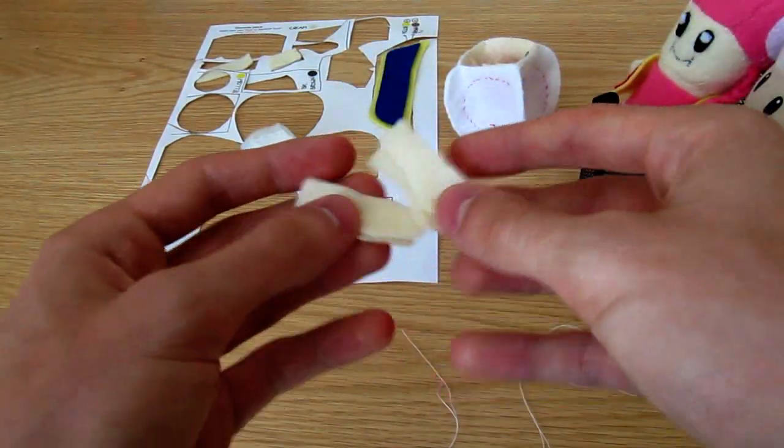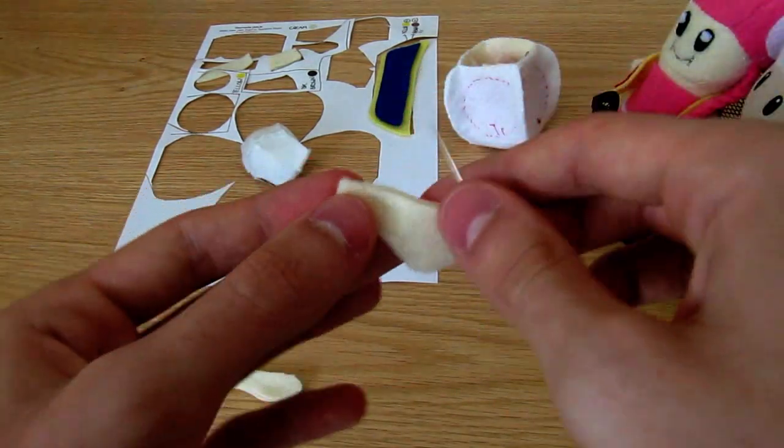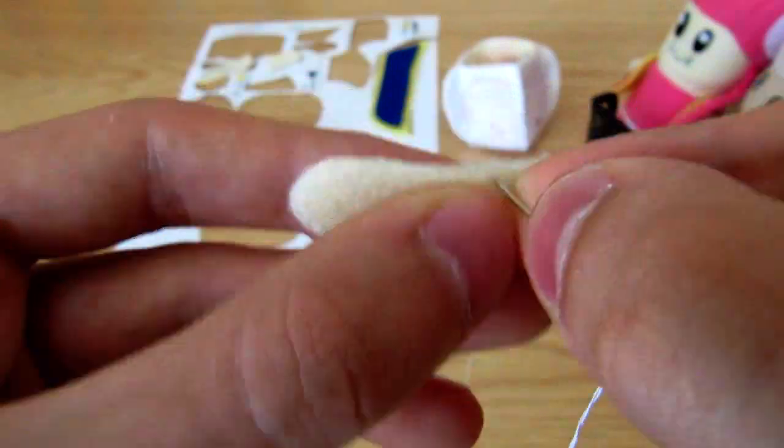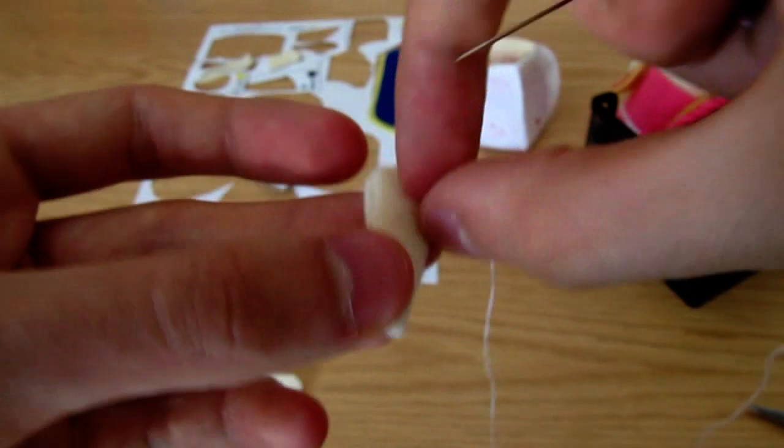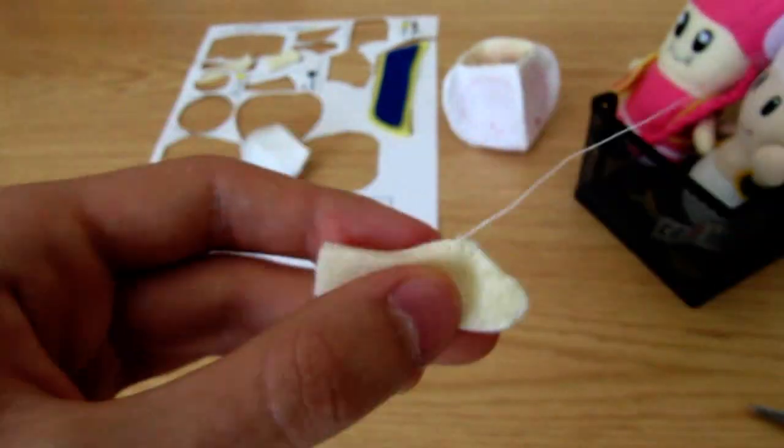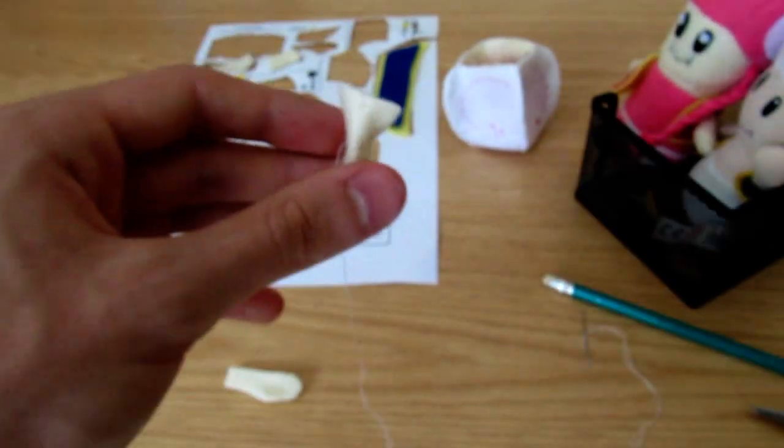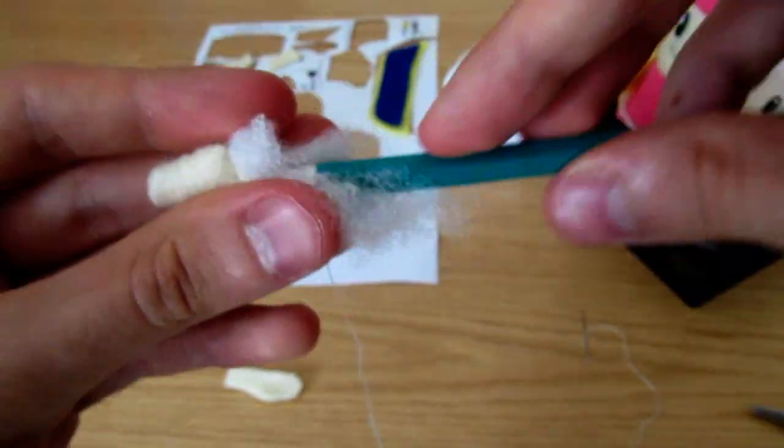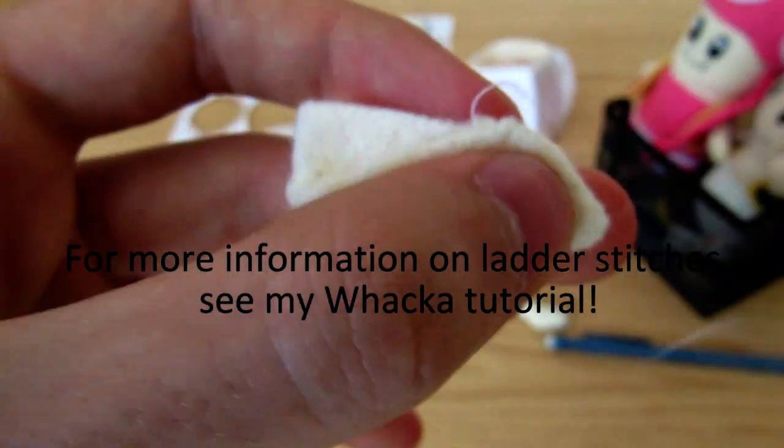We're done with the head, so it's time for the body. Pair up the arms and sew up each pair from the top end to the bottom middle, but not any further just yet. Start turning it the right way out and stuffing it as you go along. We turn it right side out early, because these arms are really thin and it's difficult to do the normal way. When it's the right way out, use ladder stitches to finish it off.